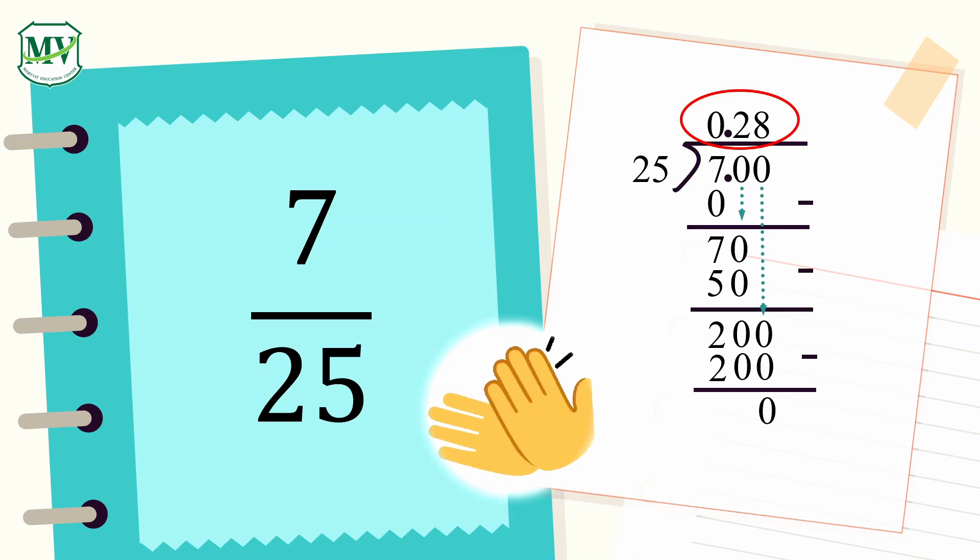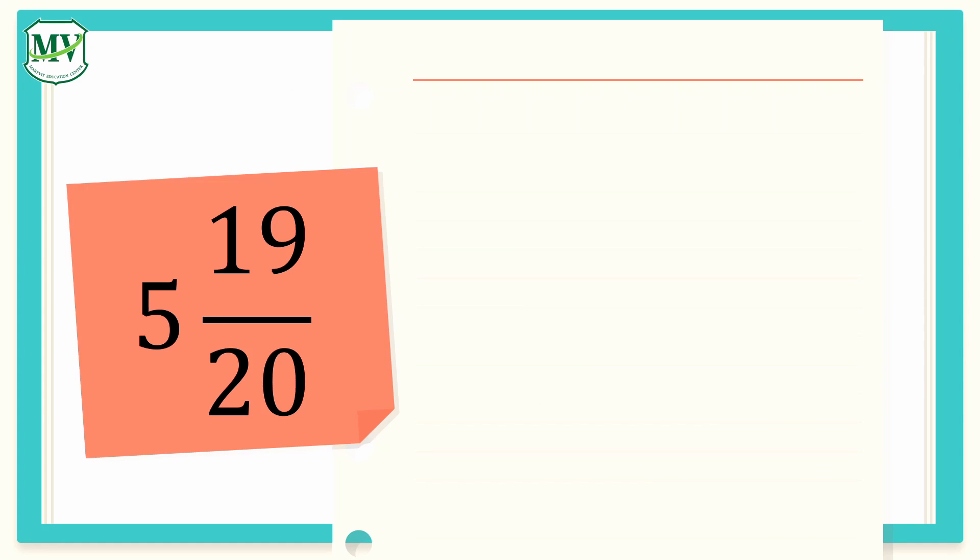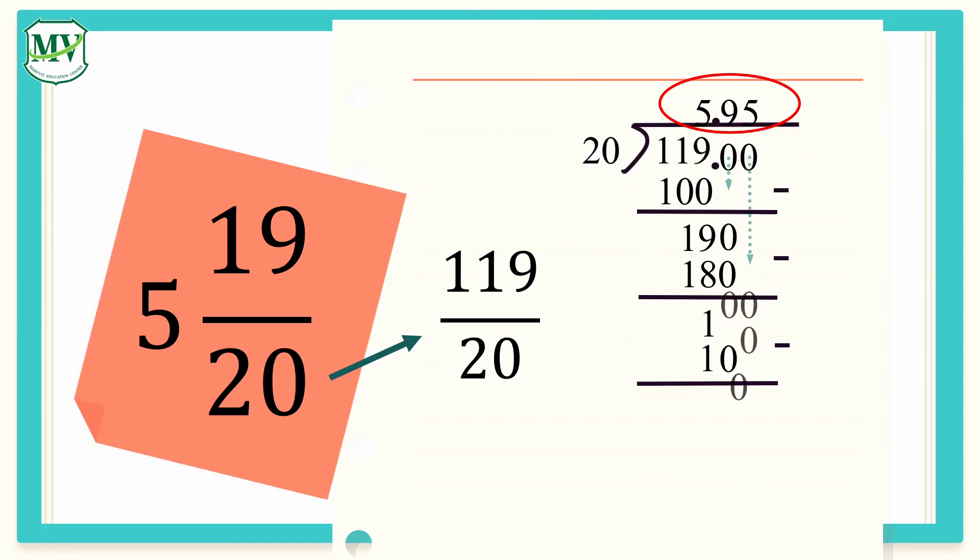Let's try another one. Convert 5 and 19 over 20 along with the music. When it stops, I'll reveal the answer. Now, this is the answer.